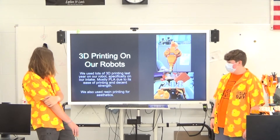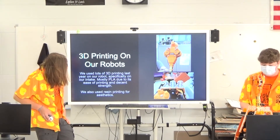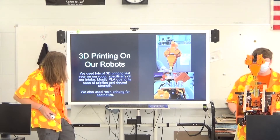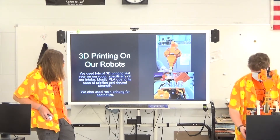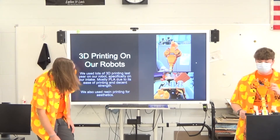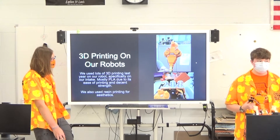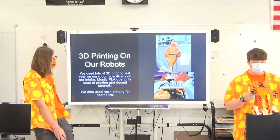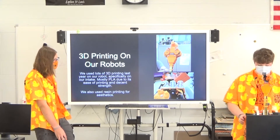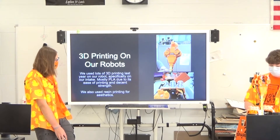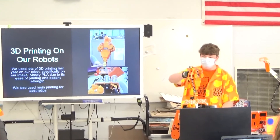On some of our robots we use a lot of 3D printing. On this one, everything orange on the gripper is 3D printed. This was great because we could make small changes and test them out very quickly after printing, and iterate over time. These parts here were all plastic 3D printed on our FFF printers, and this one was made with resin — for aesthetics.